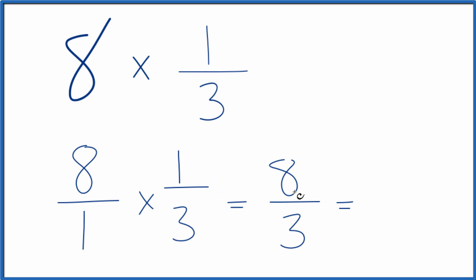3 goes into 8. Well, 2 times 3 is 6, and then we'd have 2 left over. Bring the 3 across. So 8/3, that's the same as the mixed number 2 and 2/3.